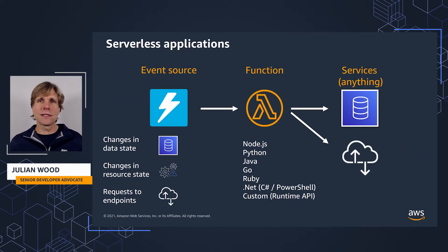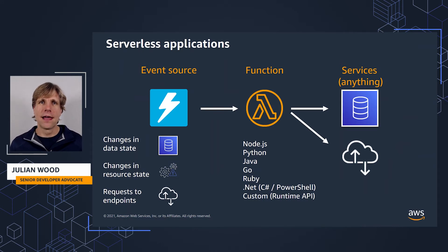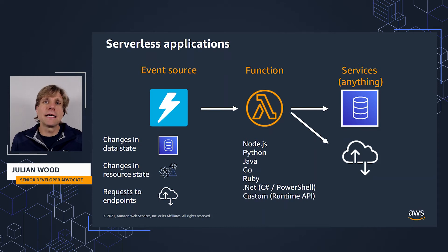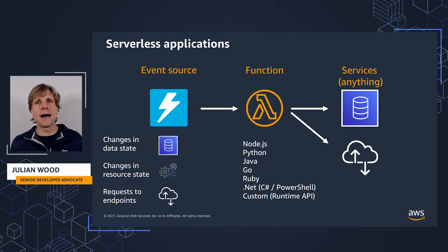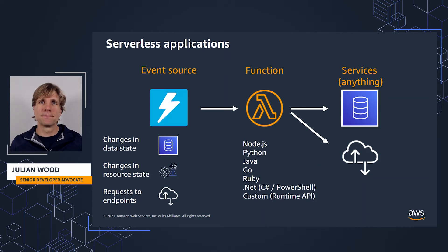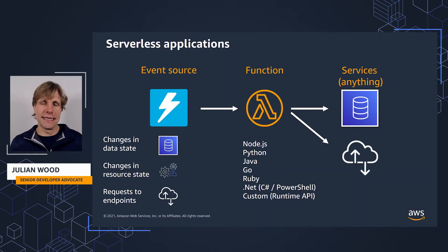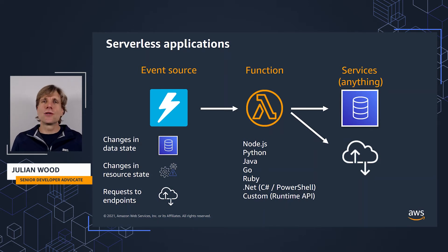This event then causes a Lambda function to run, which does some processing on the event. The function typically comprises a small amount of single-purpose code and can be written in a number of languages provided by the platform, or you can bring your own language using the Runtime API. The function can then go and perform whatever it needs to do — that could be updating a database record, returning something to a client, or talking to another API or endpoint that exists somewhere.